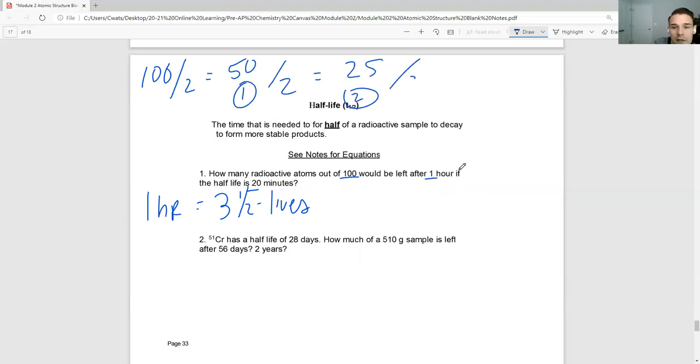How many radioactive atoms out of 100 will be left after one hour if a half-life is 20 minutes? Well, in one hour, if a half-life is 20 minutes, that means I have three half-lives. 20, 40, 60, 60 minutes is in an hour. So all I have to do is take 100 and divide by two three times. 100 divided by two is 50. That's one half-life. Divide by two, that's 25. That's two half-lives. Divide by two, that's 12.5. That's my third half-life. So I'm going to have 12.5 atoms remaining after three half-lives.